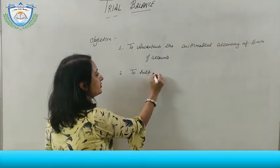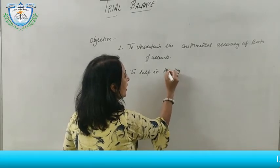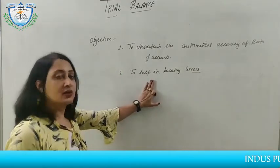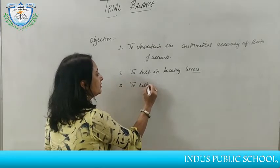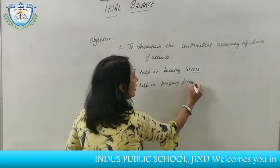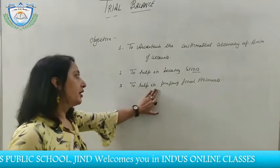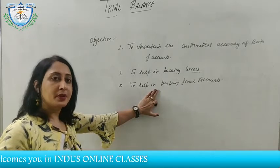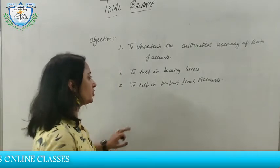The second object is to help in locating errors — it helps find out errors. The third object is to help in preparing final accounts. After preparing the trial balance, we prepare the final accounts: trading account, profit and loss account, and balance sheet.